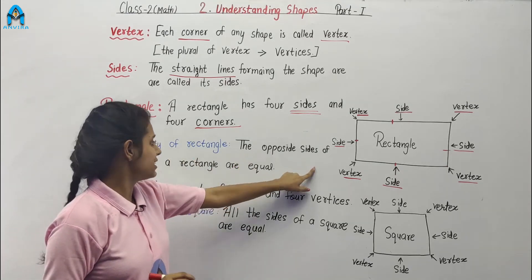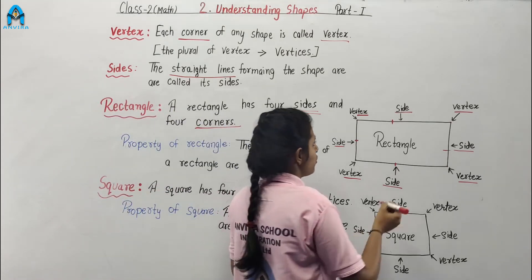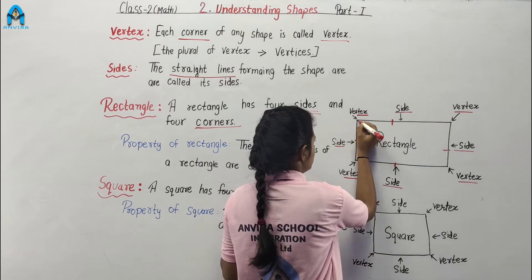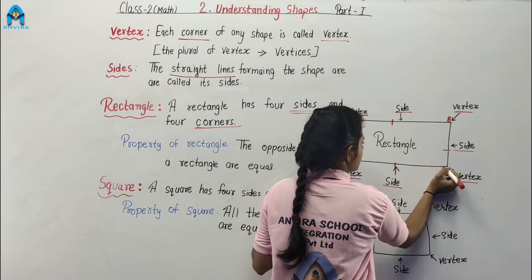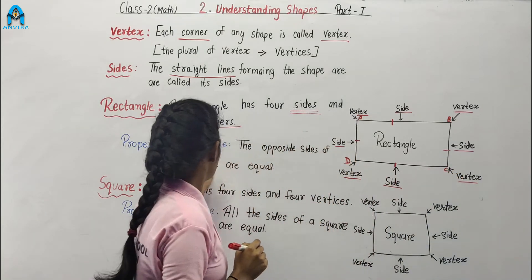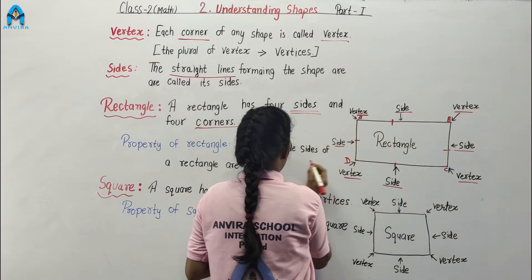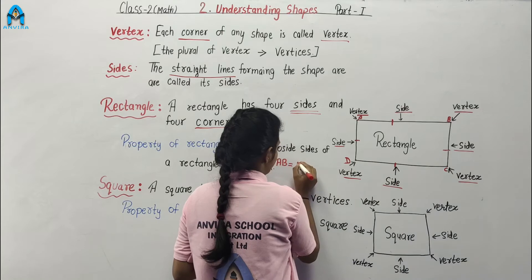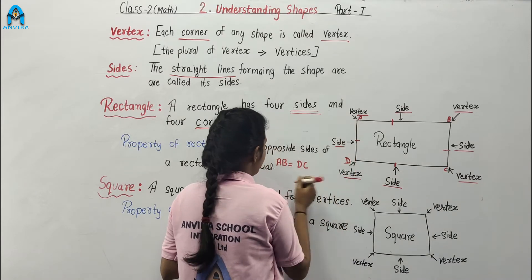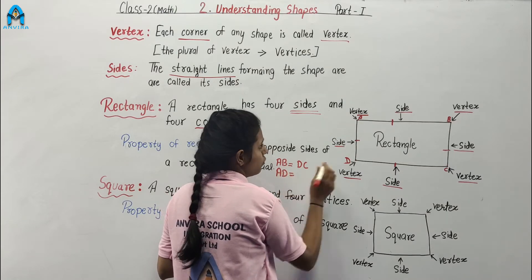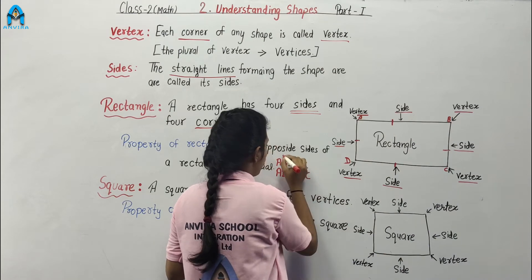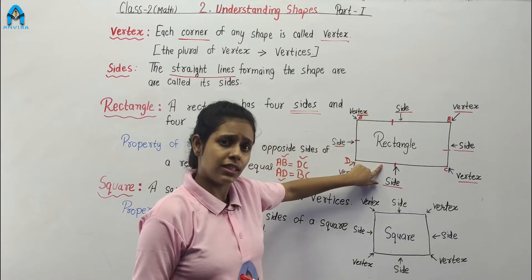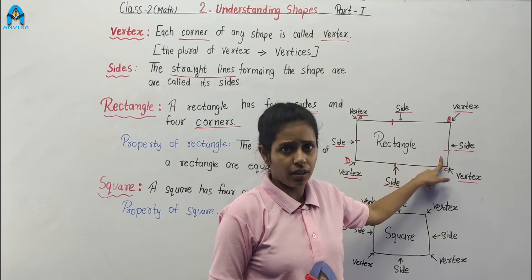Suppose we label the corners A, B, C and D. Properties of rectangle: line AB is equal to line DC, and line AD is equal to line BC. The opposite sides are equal — this side and this side are equal, and this side and this side are equal.